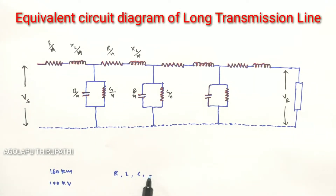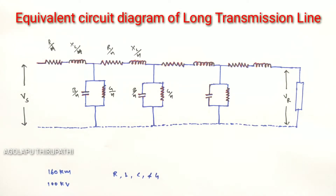capacitance, and conductance of transmission lines are uniformly distributed over the entire length of the line. But so far it has been assumed that the line has lumped constants. In previous transmission line calculations — for short and medium transmission lines — we considered the parameters as lumped ones to get reasonable accuracy.